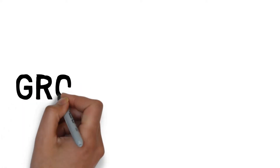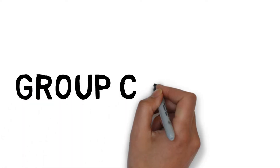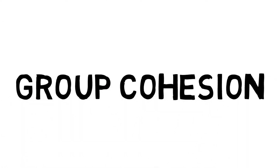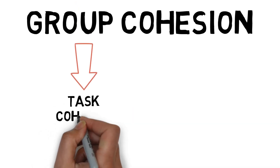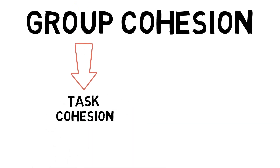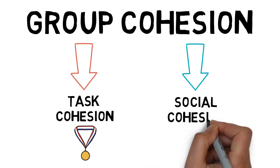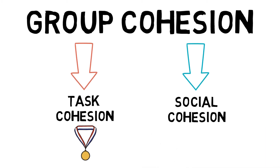Group cohesion is a dynamic process which is reflected in the tendency for a group to stick together and remain united in pursuing their goals and objectives. Task cohesion is the willingness of the team to work together to achieve their common goals, and social cohesion is the willingness of a team to interact with and socialise with each other.